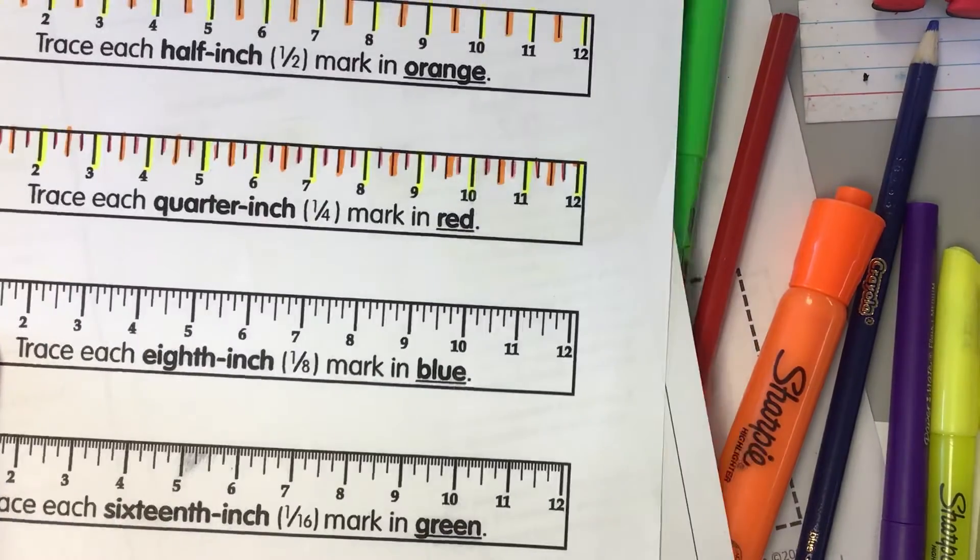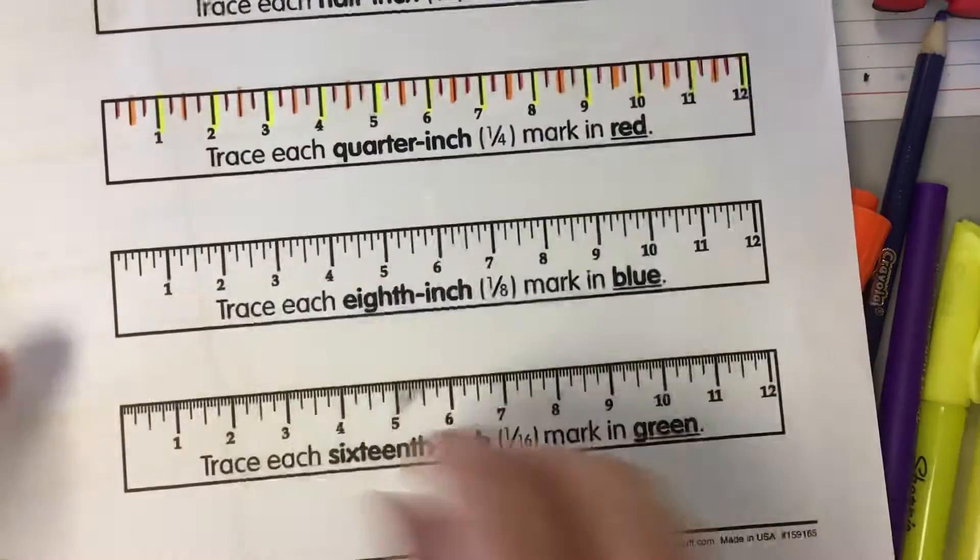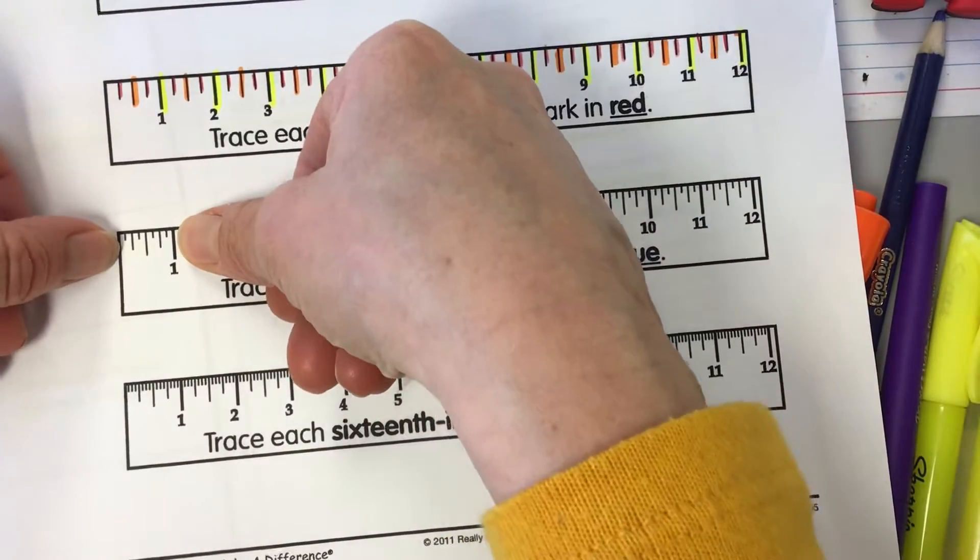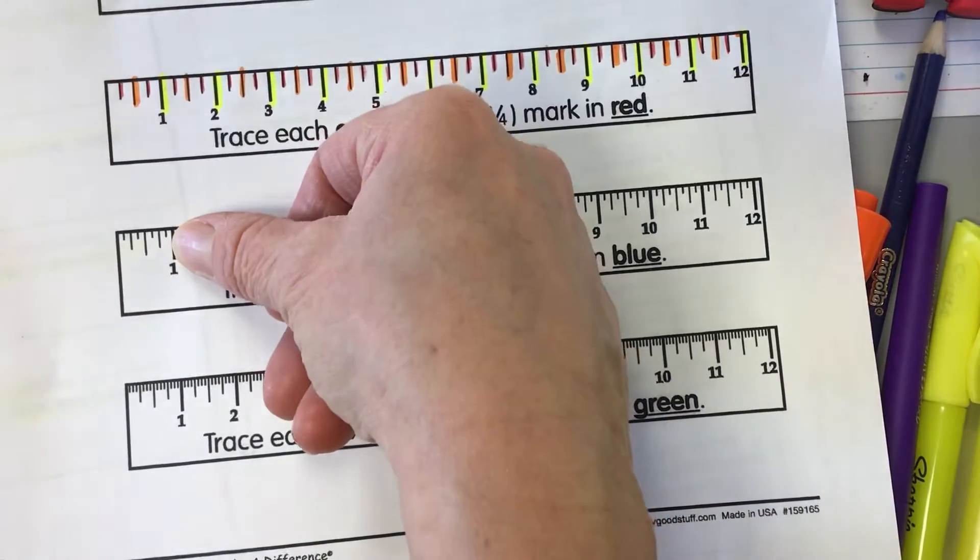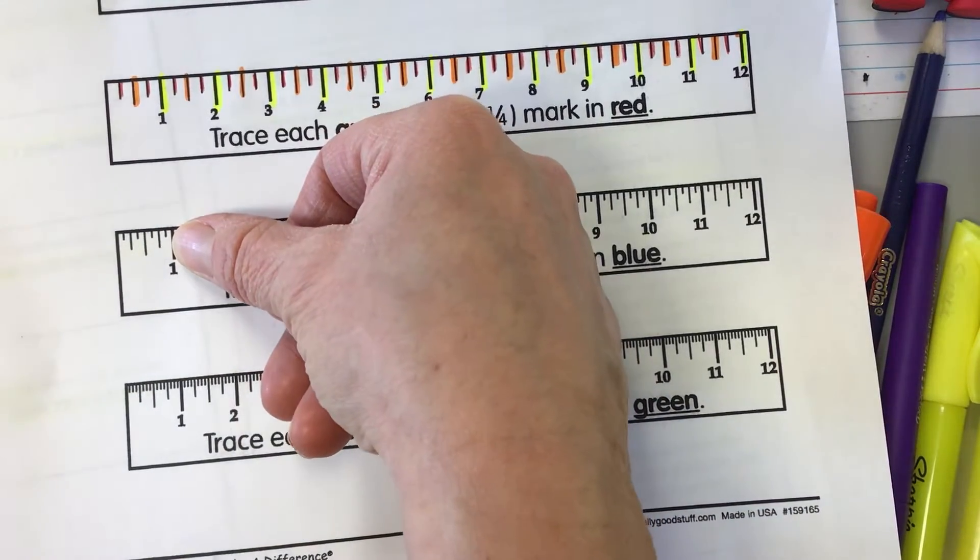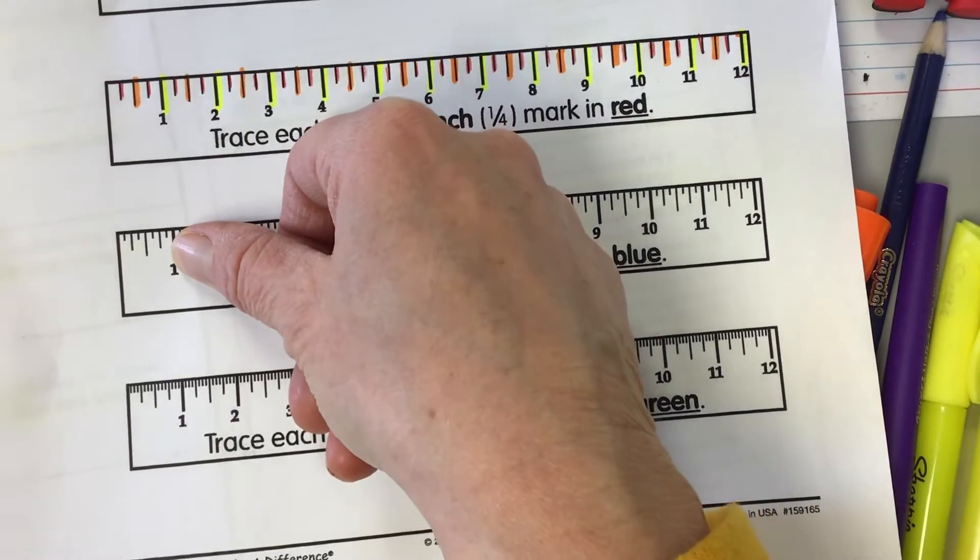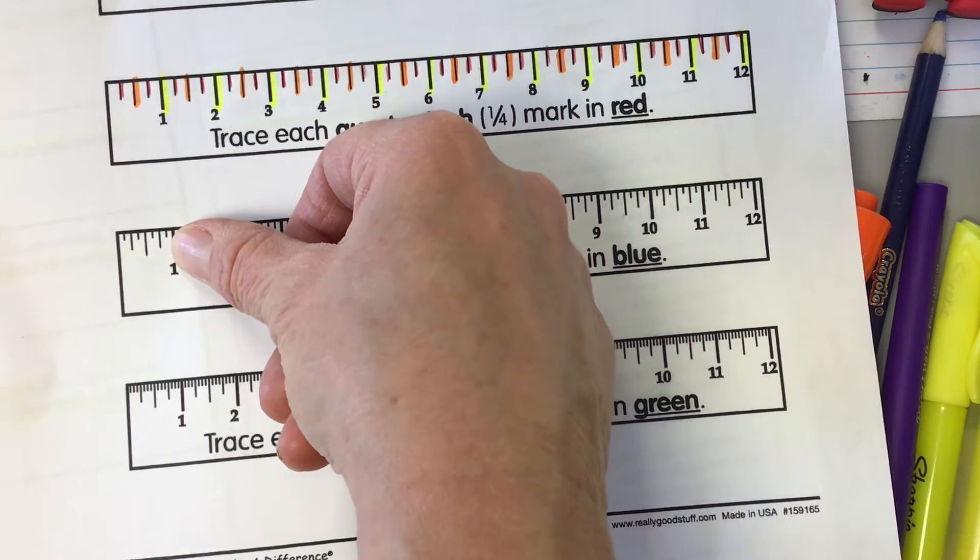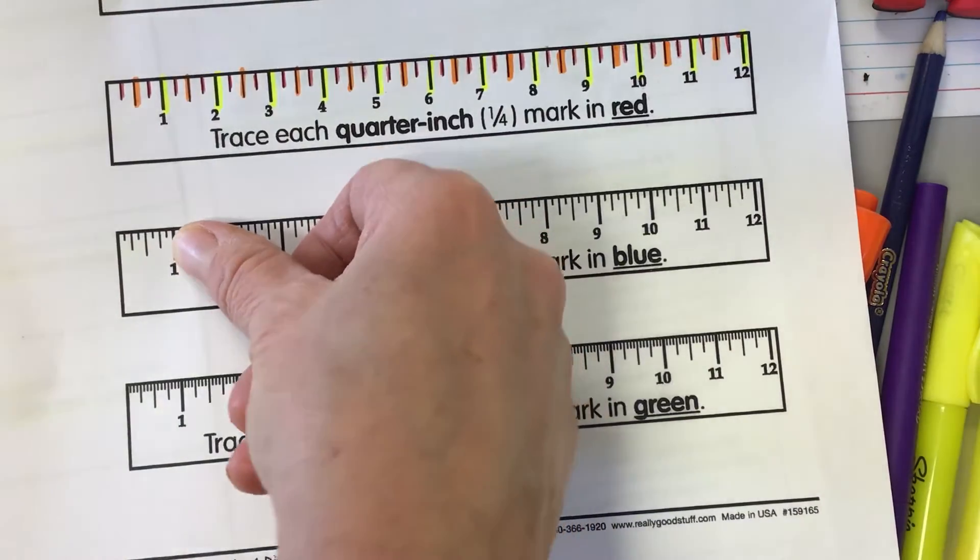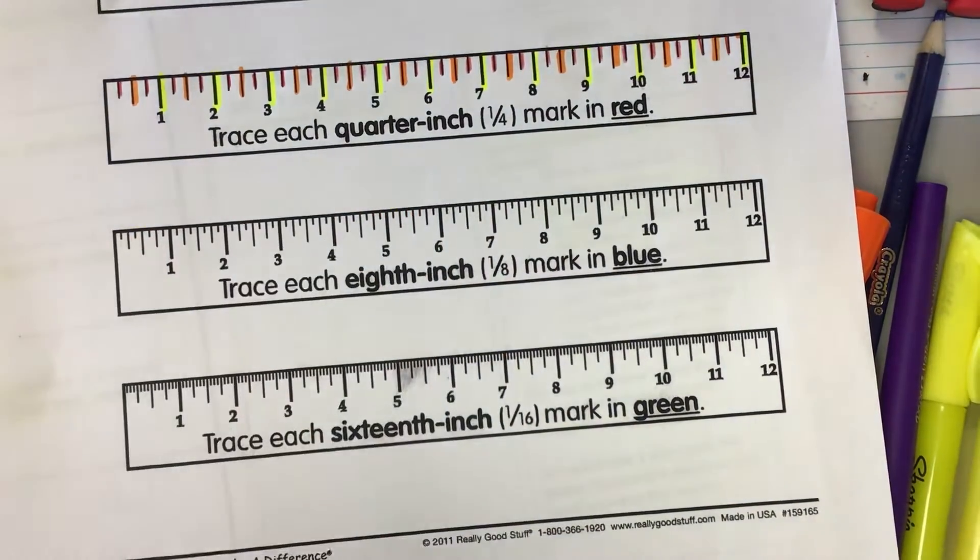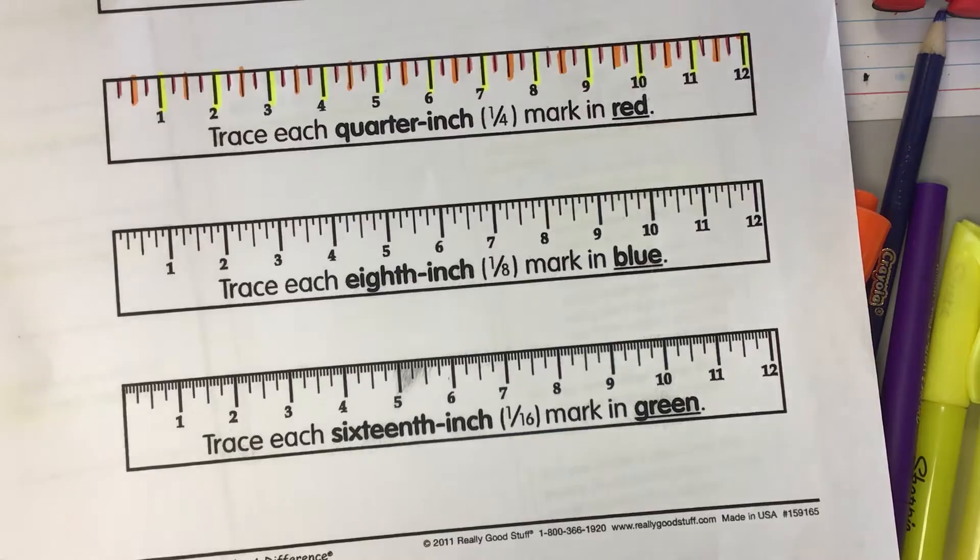So now we have a ruler that has each inch divided into eight equal parts. Now again, this is your fourth grade standard to be able to read a ruler to the nearest eighth of an inch. Now remember, just because it might say read it to the nearest eighth of an inch, you're going to read it to the nearest quarter, the nearest half, the nearest whole, whatever it's closest to. Okay?